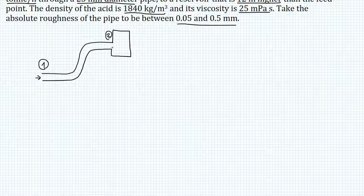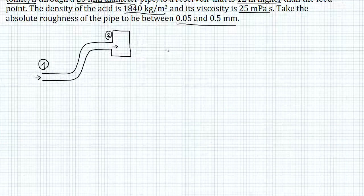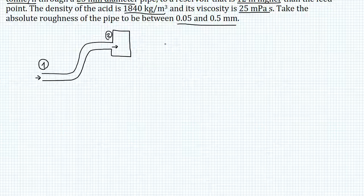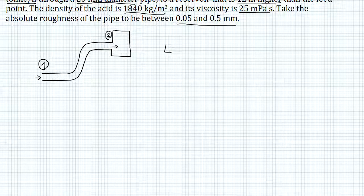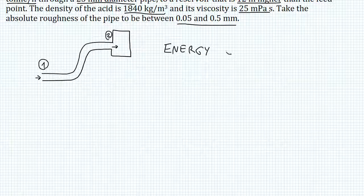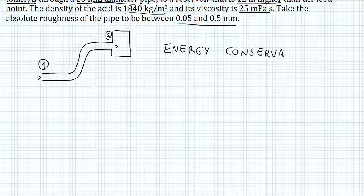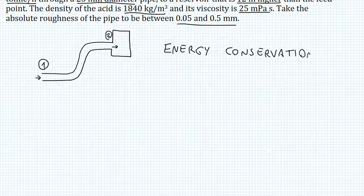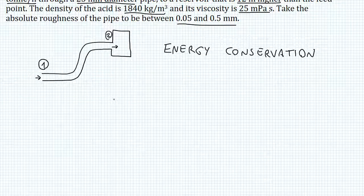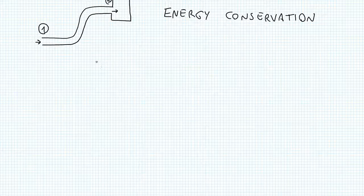So the most important concept that will help us solve this problem is energy conservation. And this can be used through equations called energy balances. Applying an energy balance here at point 1 and point 2 will help us find the delta P, our pressure drop.